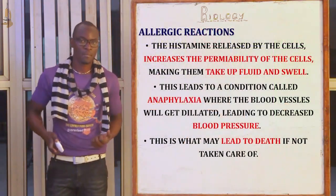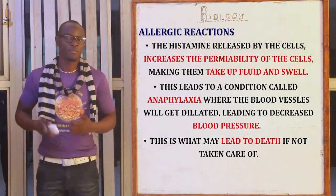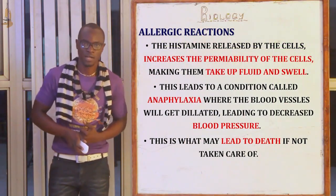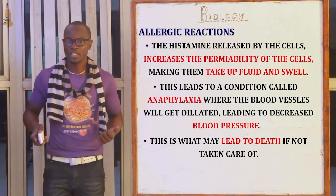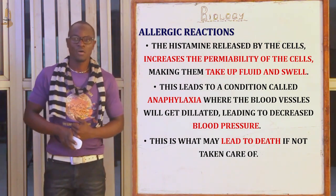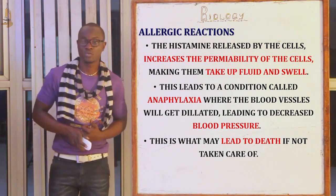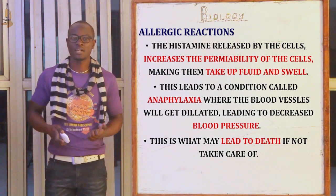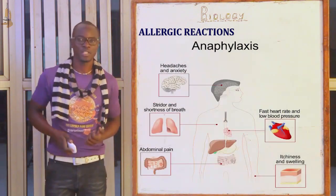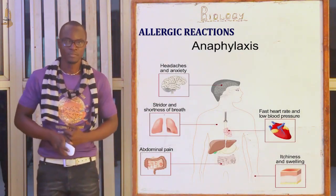Histamine increases the permeability of the cell, making them take up fluid and eventually leads to swelling. This may lead to a condition called anaphylaxis, whereby the blood vessels get dilated, leading to lowering of the blood pressure, which eventually may lead to death.